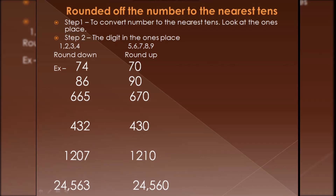There are two steps to remember when rounding to the nearest ten. First, look at the one's place. If the one's place is 1, 2, 3, or 4, then you round the number down. If the one's place is 5, 6, 7, 8, or 9, then you round the number up.